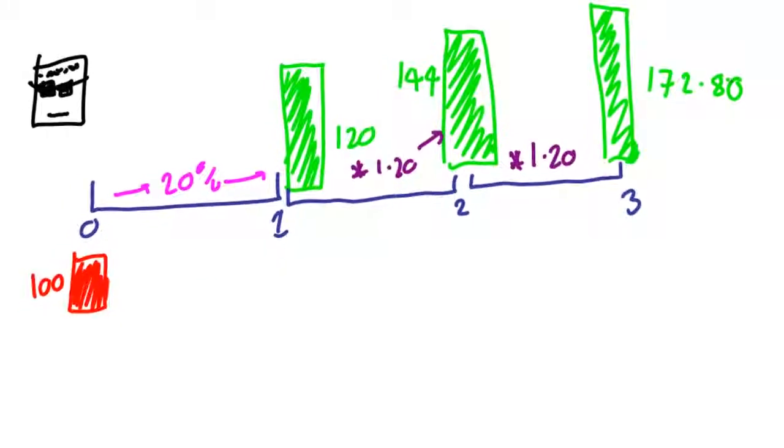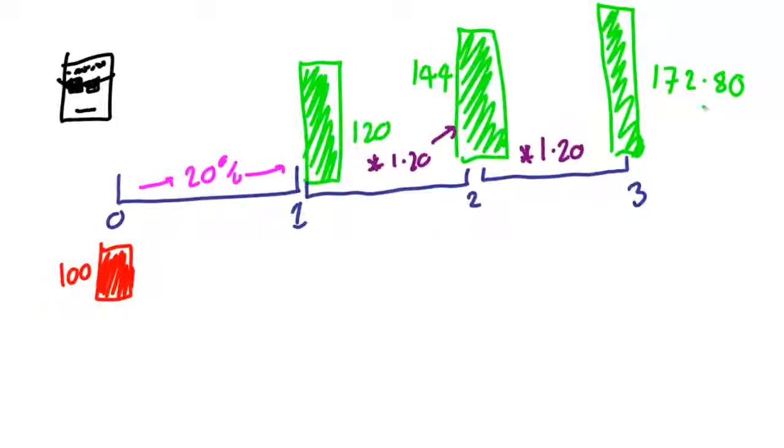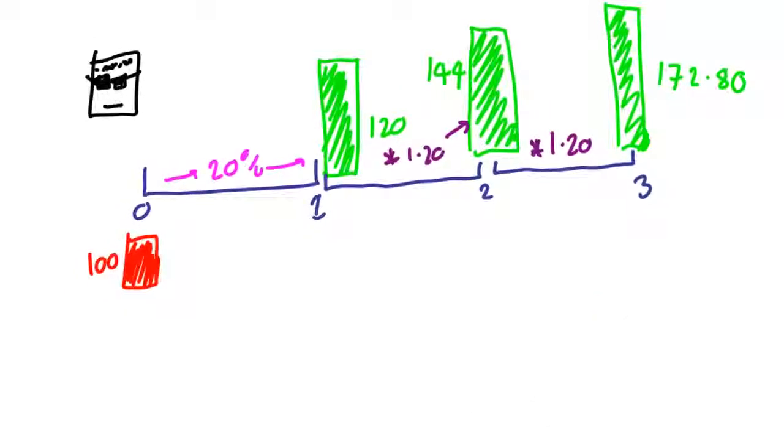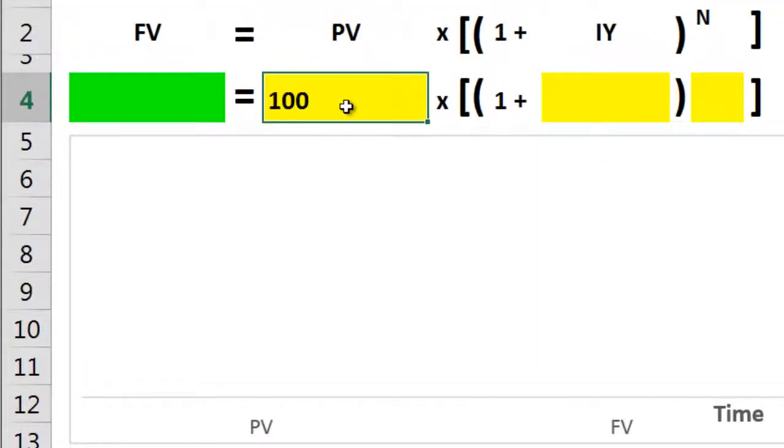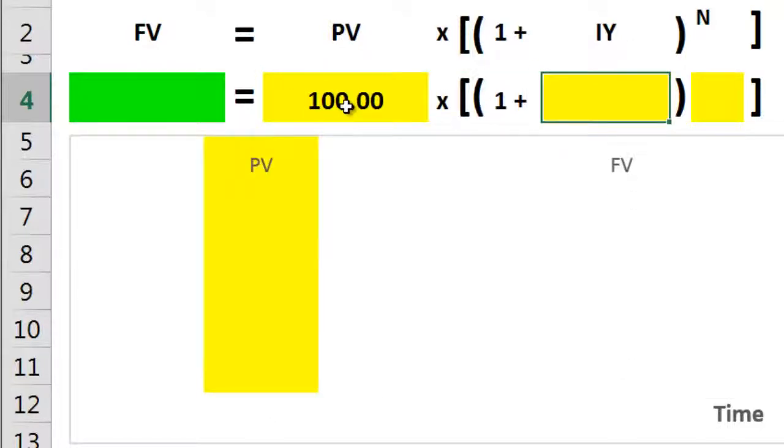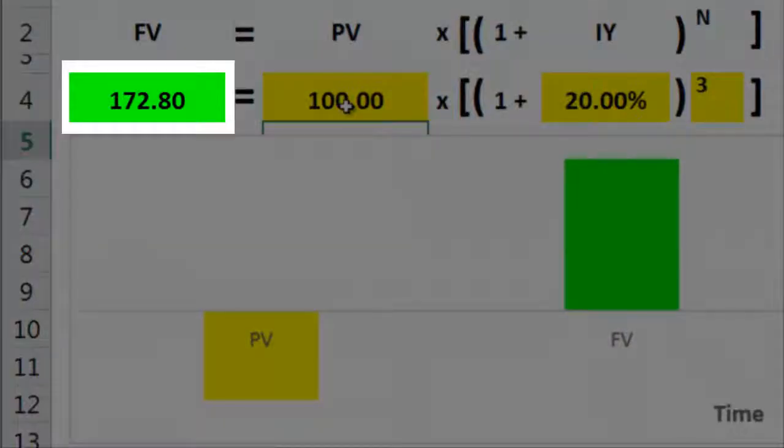And that is doing it by hand. But let's put the same figures into the equation to do it much quicker on that cunning spreadsheet I mentioned earlier. First, we input $100, then 20%, then raise this to the power three, and this gives us exactly $172.8, just like when we did it manually.